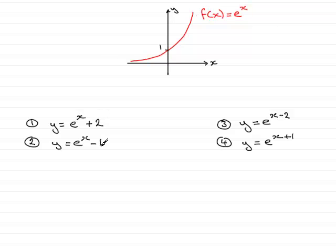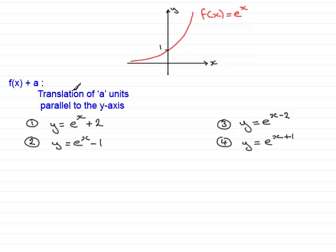How am I going to sketch graphs 1 and 2: y equals e to the power x plus 2, and e to the power x minus 1? In each of these, f of x plus 2 would be e to the x plus 2, and e to the x minus 1 comes from subtracting 1 from f of x. So when you're adding or subtracting a number from a function of x, graphically it represents a translation. If you've got f of x plus a, you translate the graph a units parallel to the y axis — so plus 2 moves the graph up 2 units, and minus 1 slides it down 1 unit.